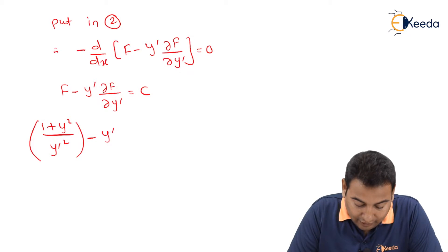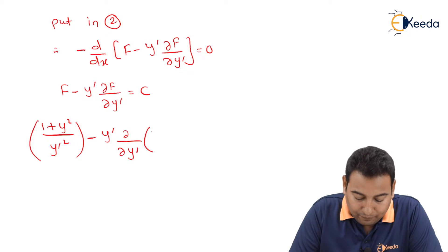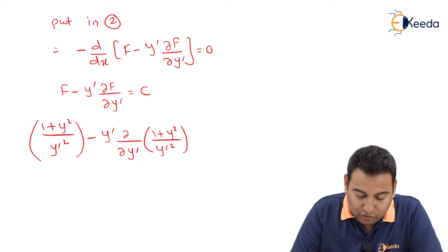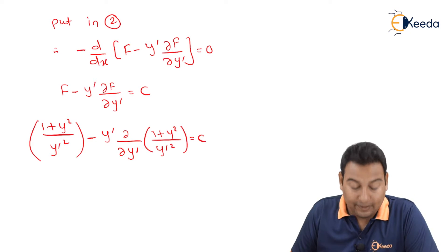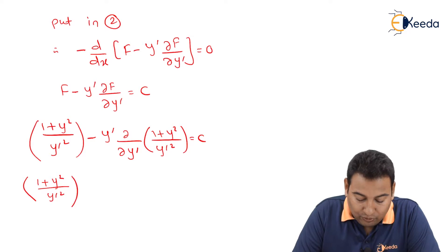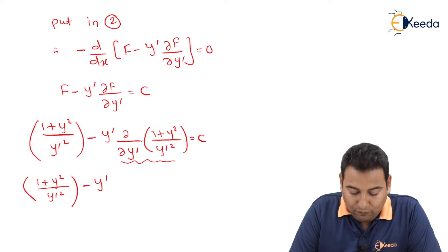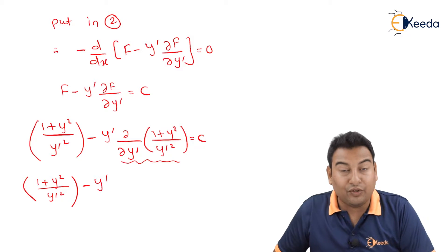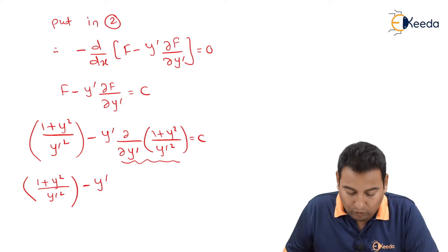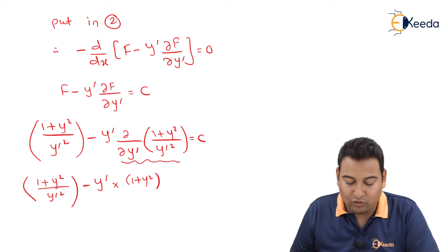So we have (1 + y²)/y'² − y'·∂/∂y'[(1 + y²)/y'²] = c. The first term remains as is. We need to find the derivative of this term with respect to y', treating x and y as constants. The numerator (1 + y²) is constant.